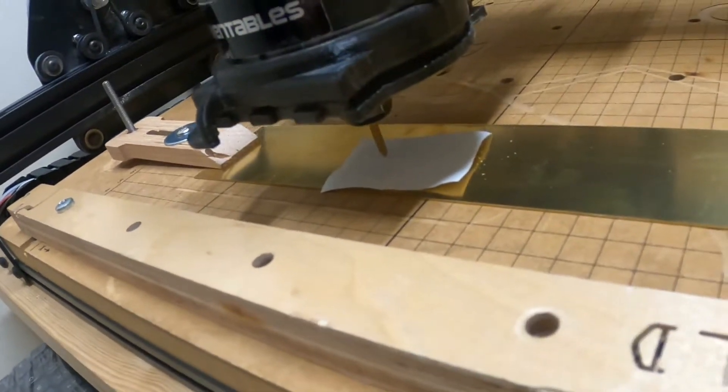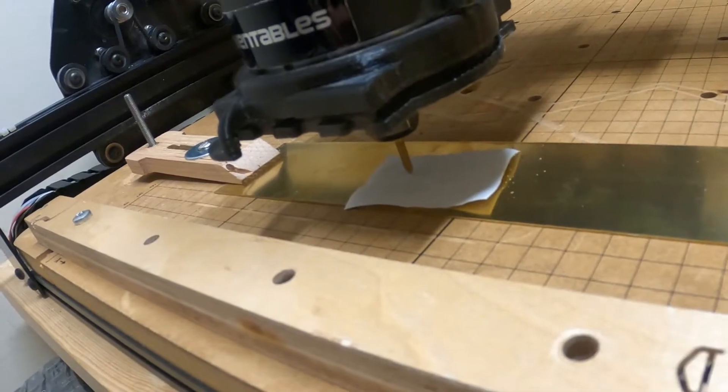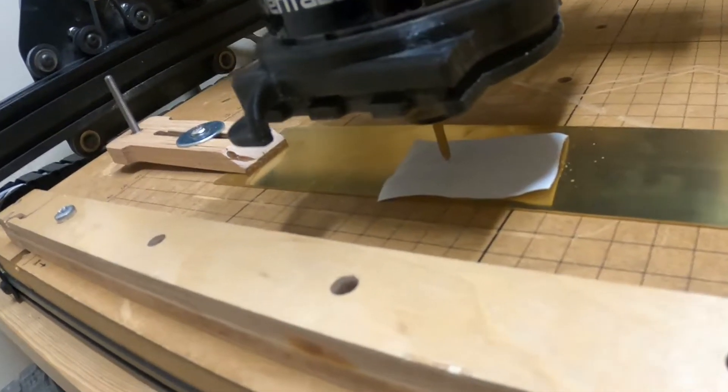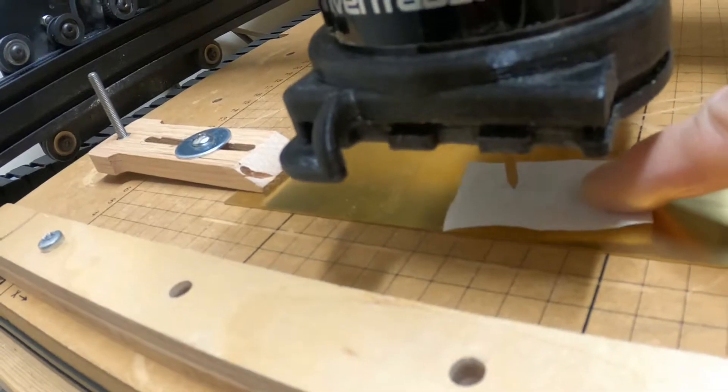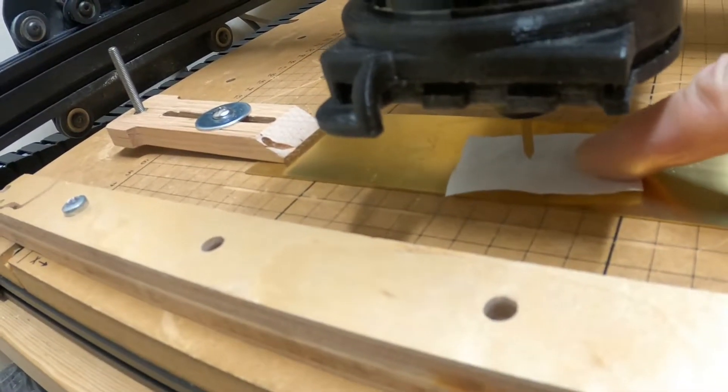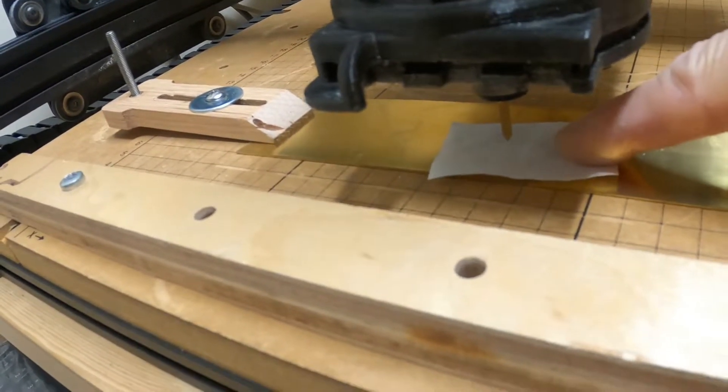Alright, so we brought the router down so the tip of the V-bit just causes this piece of paper to drag just a little bit. Right now, probably about three, maybe four thousandths off the surface of the brass.